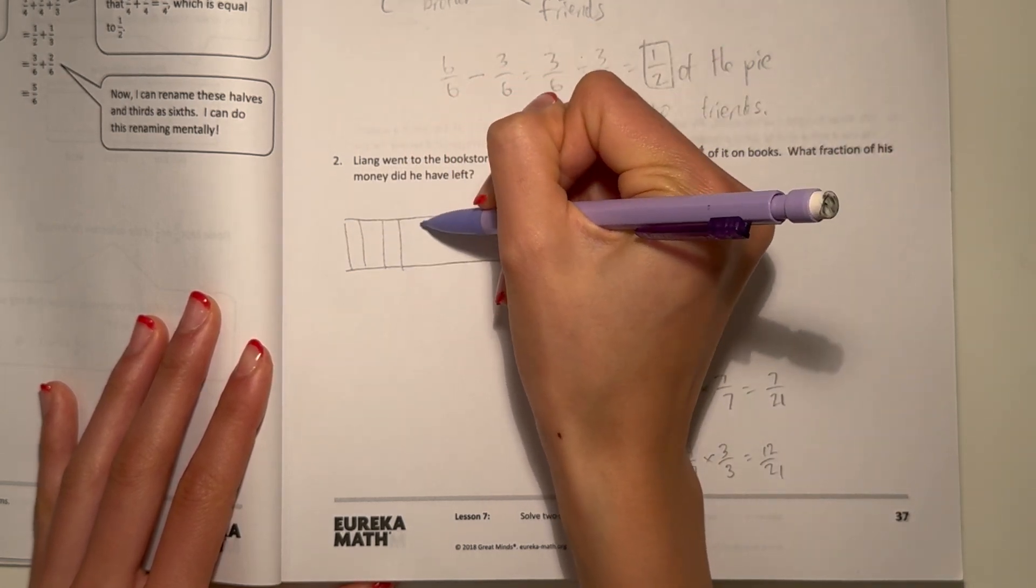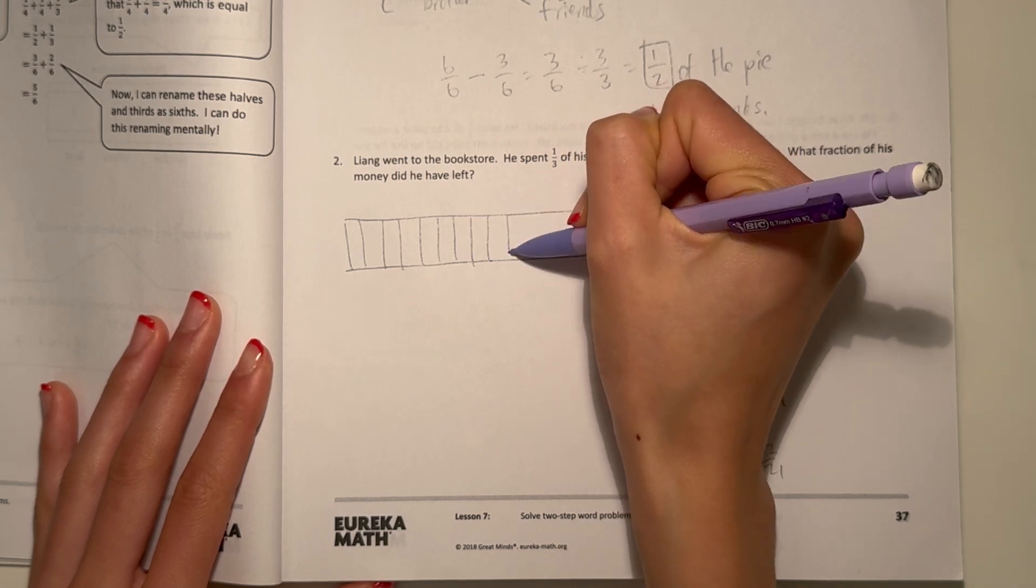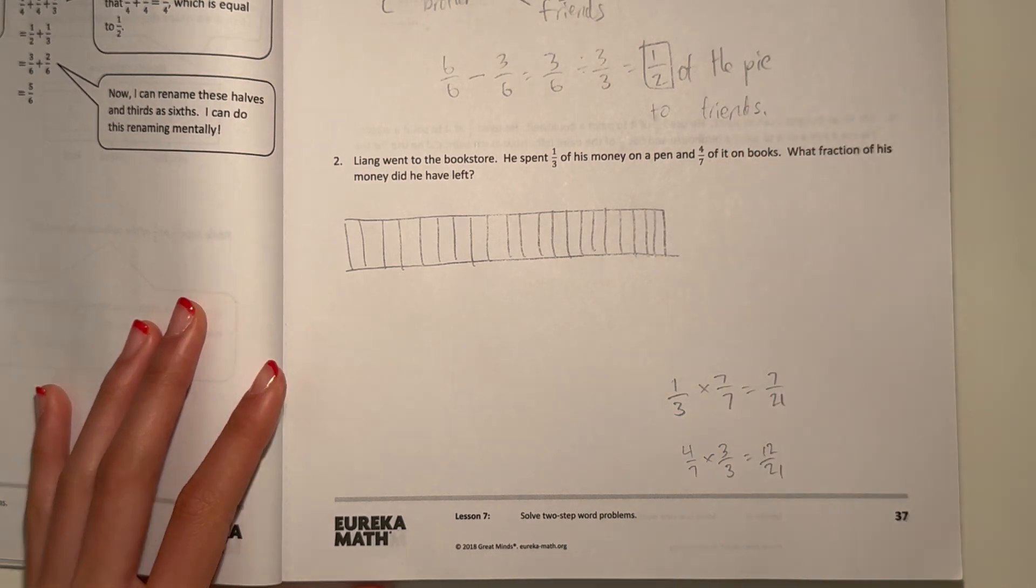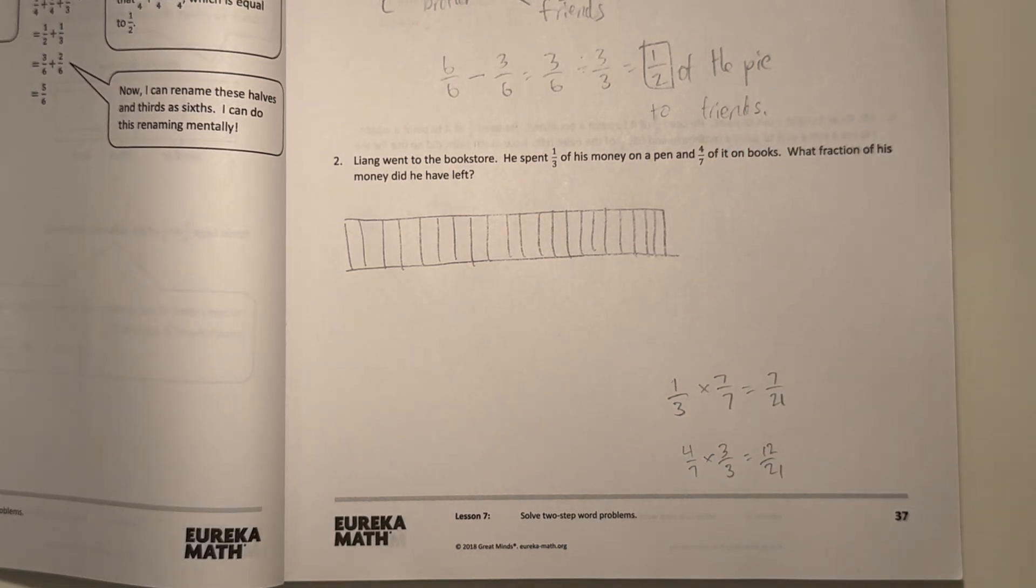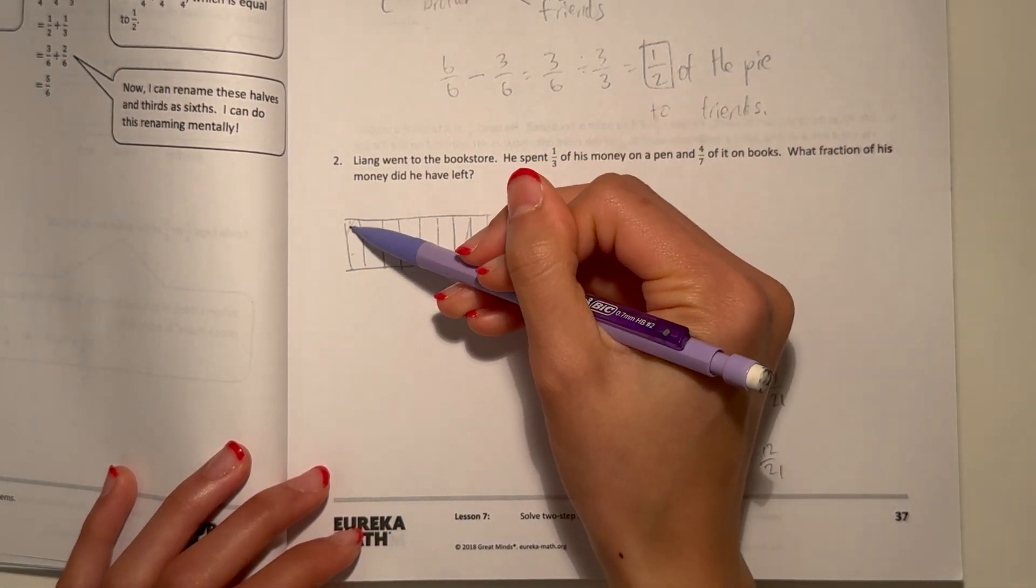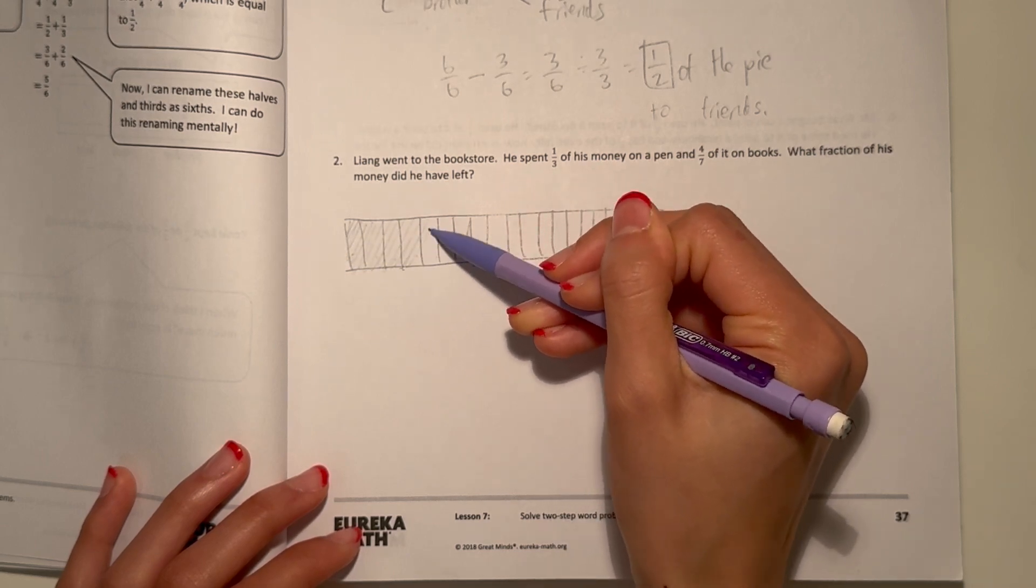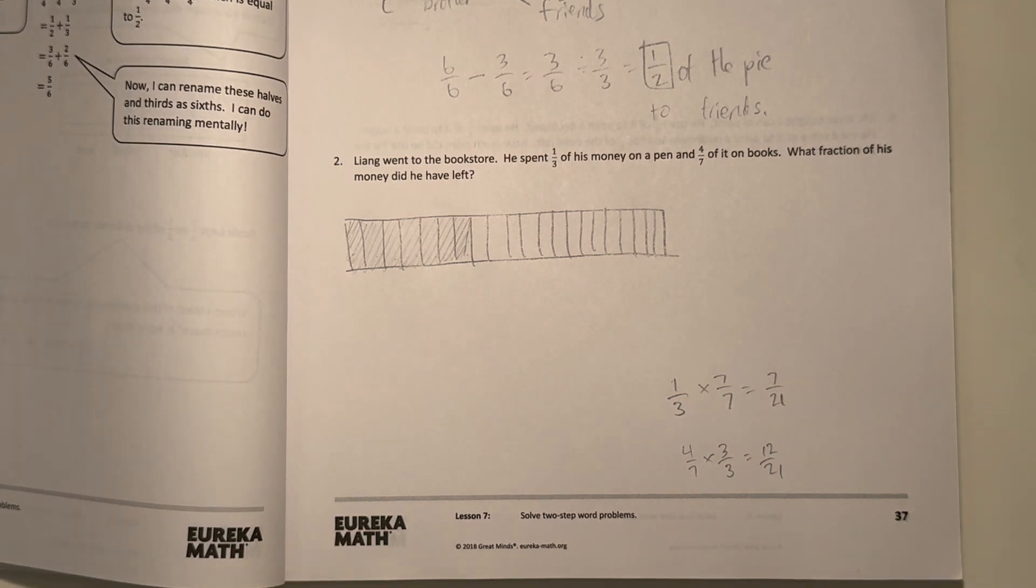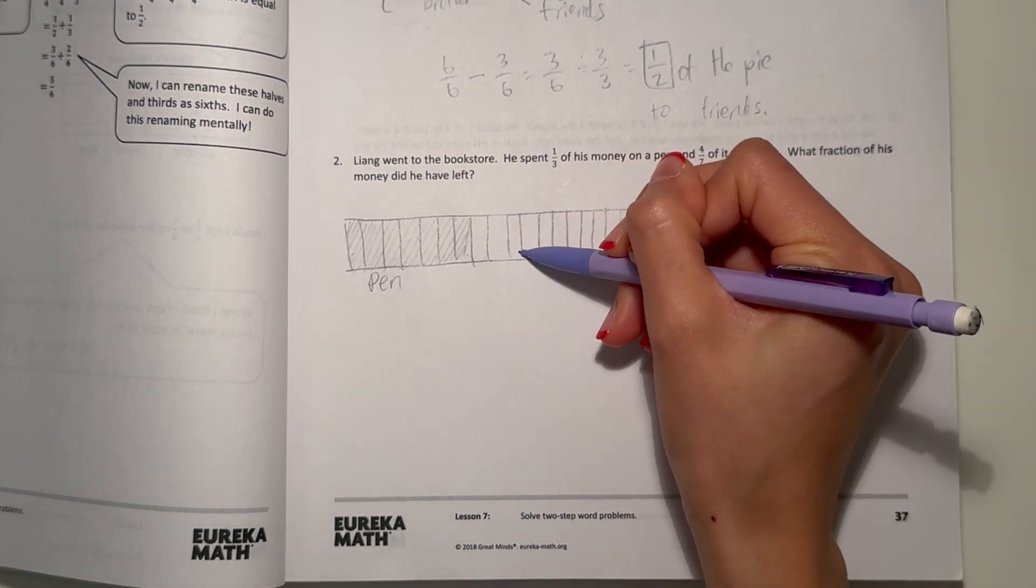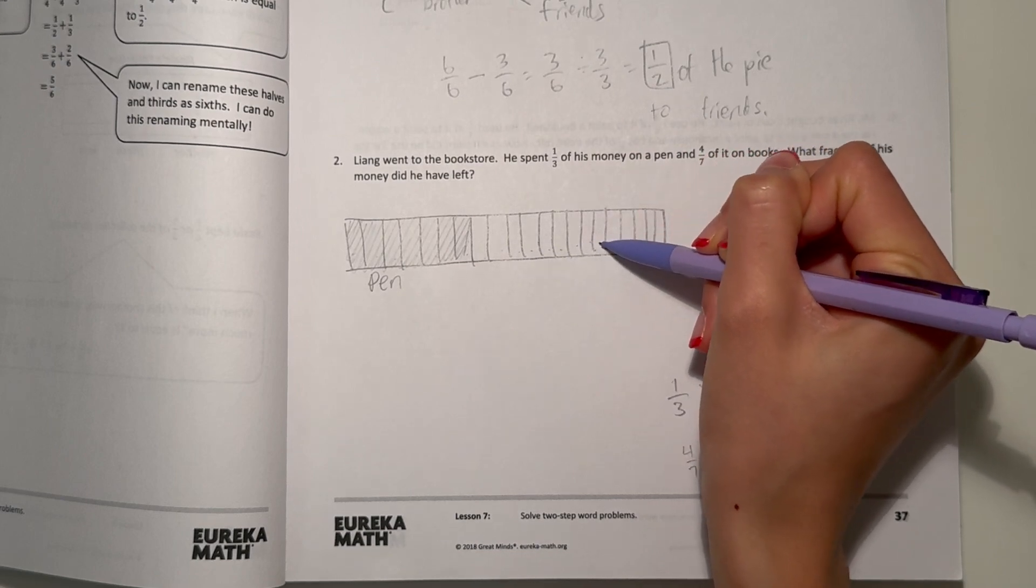Drawing the tape diagram split into twenty-one parts. Seven out of twenty-one for the pen, and twelve out of twenty-one for books.